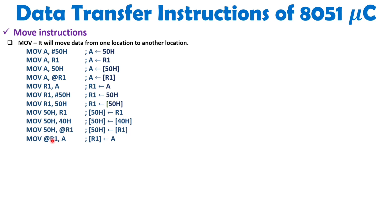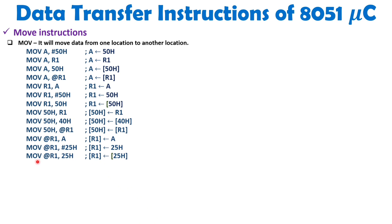When you execute MOV @R1, A, the content of the accumulator is moved to the internal RAM address pointed to by R1. When you write MOV @R1, #25H, the value 25H is immediately transferred to the address pointed by R1 in internal RAM. When you write MOV @R1, 25H (without hash), 25H is treated as an internal RAM address, and the data at that address is loaded into the location pointed by R1.